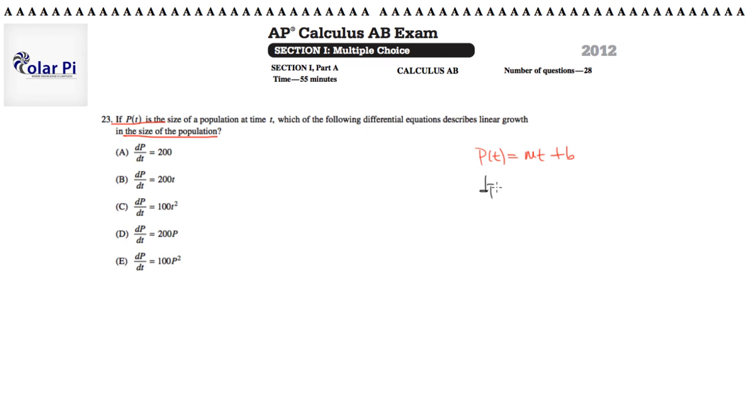So dp dt, when we take the derivative, is going to equal simply m. This is a constant, so it goes to zero. And then the derivative of mt, where m is a constant and t is a variable, should just be m.